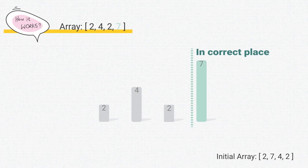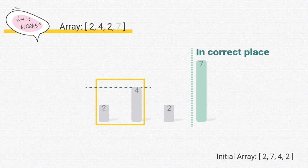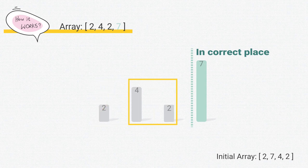Let's start our second scan by comparing the two elements on the very left, 2 and 4. We draw a rectangle again to show what we're comparing. 2 is smaller than 4, so we do nothing. Now we move the rectangle one step to the right and compare 4 with 2. 4 is larger than 2, so it should go to the right — we swap their position.